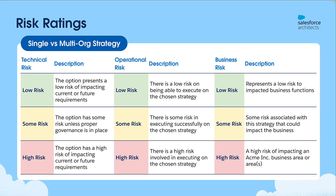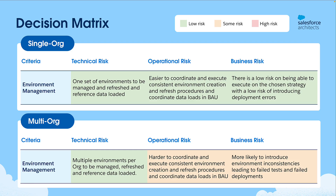So now we're ready to do a side-by-side comparison. The decision matrix simply takes each assessment criteria and rates each option based on the risk. Here we can see an example for environment management where for this project a multi-org approach had some elevated risk. What I like about this process is it takes emotion out of the decision-making process. You're really just debating over low, some, or high risk with key stakeholders before using those ratings to drive a final decision.